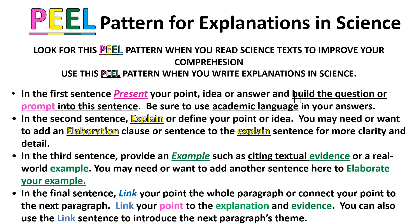The third sentence is an Example. If you're writing from a text, you use textual evidence — you report the evidence you've gotten from the text. If it's based on some concept or topic in science, you give an example from memory. You may also want to add an elaboration to make it easier for your reader. In the final sentence you want to Link — you connect the example to the explanation, tying the example together with the definition or the key characteristics.